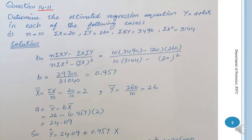Determine the estimated regression equation y = a + bx in each of the following cases. In this question there are different cases discussed. You will use different formulas of slope coefficients. Why do you have different selection of formulas? Because you will see the information that you have given, and accordingly you will select formulas.